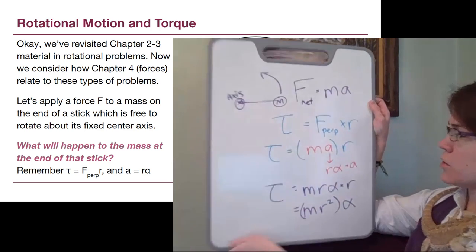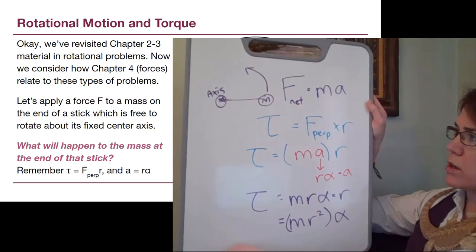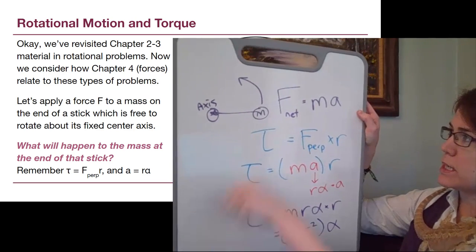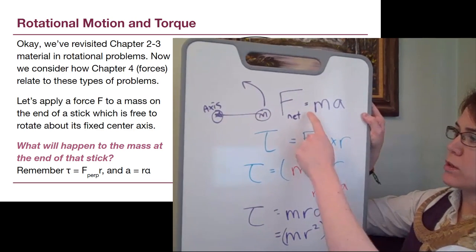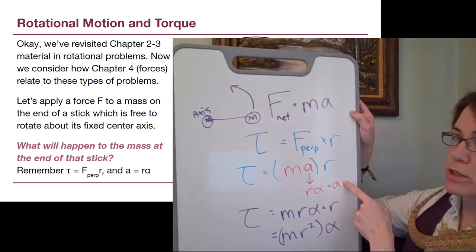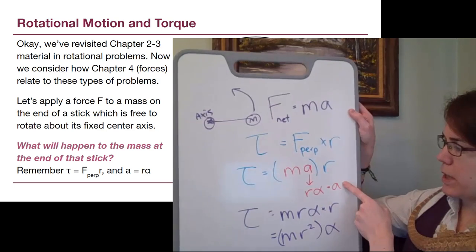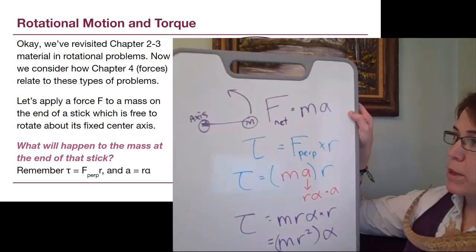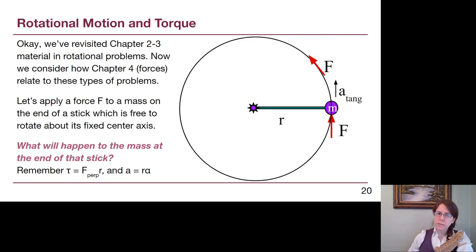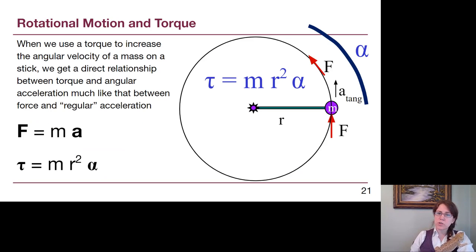Okay, so not all that exciting a derivation. We have this key idea from chapter 4, this key idea from chapter 9, and this new understanding of angular acceleration. But the result that we get, which is on the next slide, the result that we get is torque equals mass times radius squared times this angular acceleration that we have.